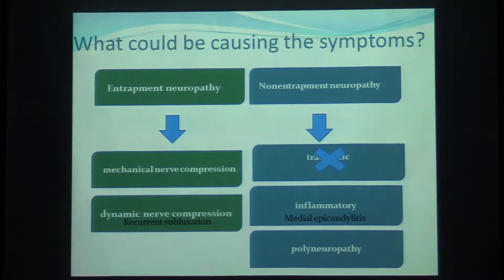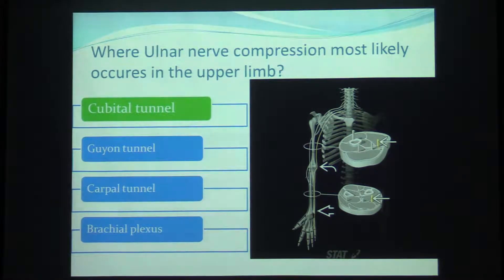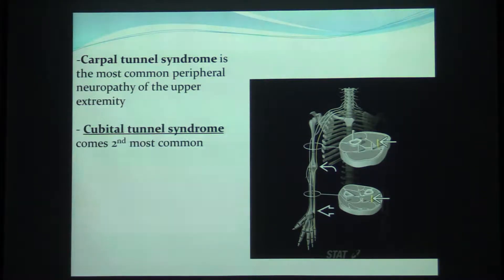Residents don't have golfer's elbow — we don't have time to play golf. It could also be polyneuropathy, but not in our case because it's isolated to one hand, so we can eliminate that. Ulnar nerve compression most likely occurs in the upper limb. The most common location is the cubital tunnel. Carpal tunnel syndrome is a different entity because it's the median nerve passing through. The most common peripheral neuropathy in the upper extremity is carpal tunnel syndrome, and cubital tunnel syndrome comes second.